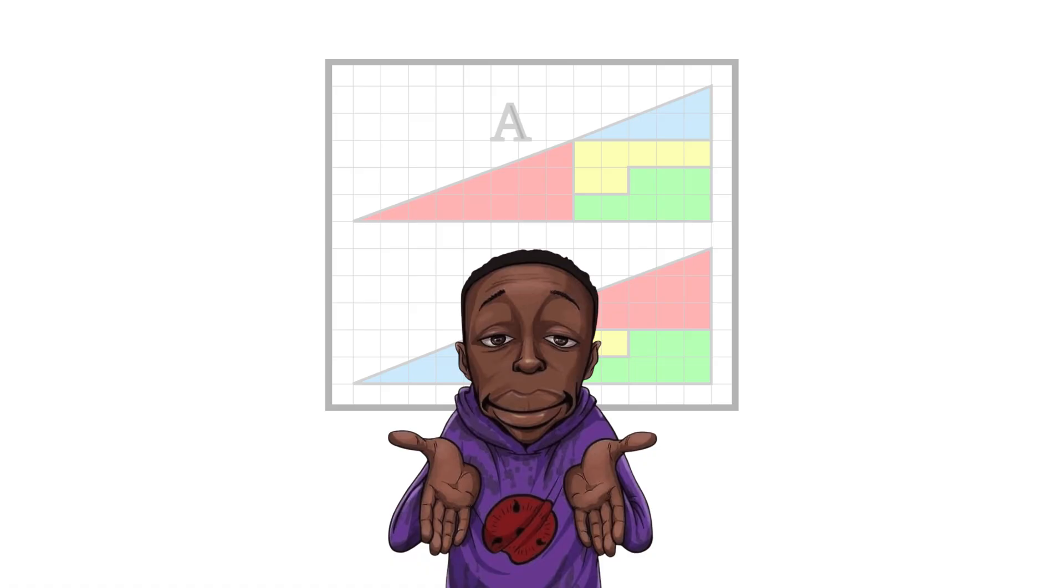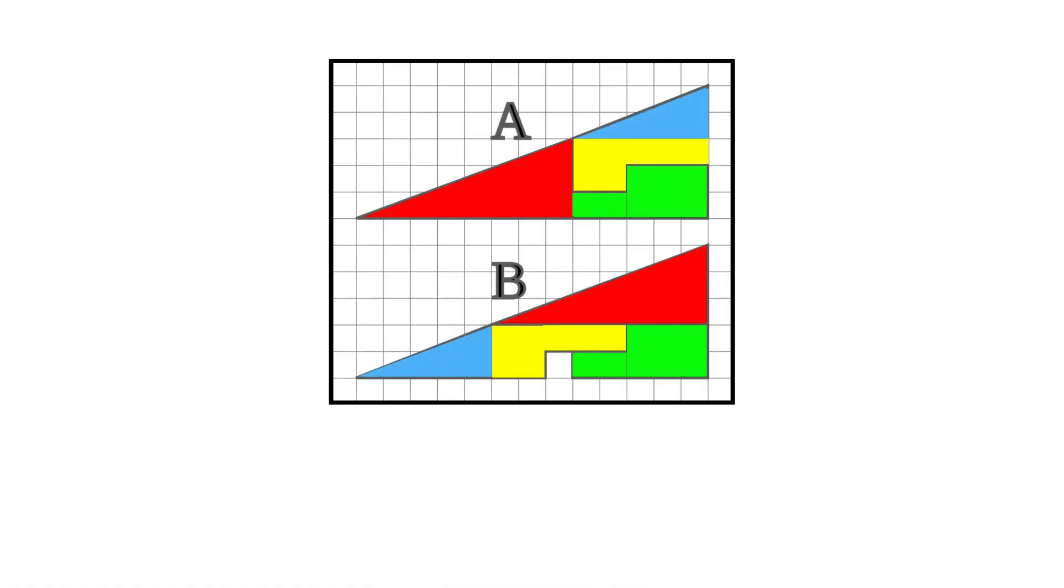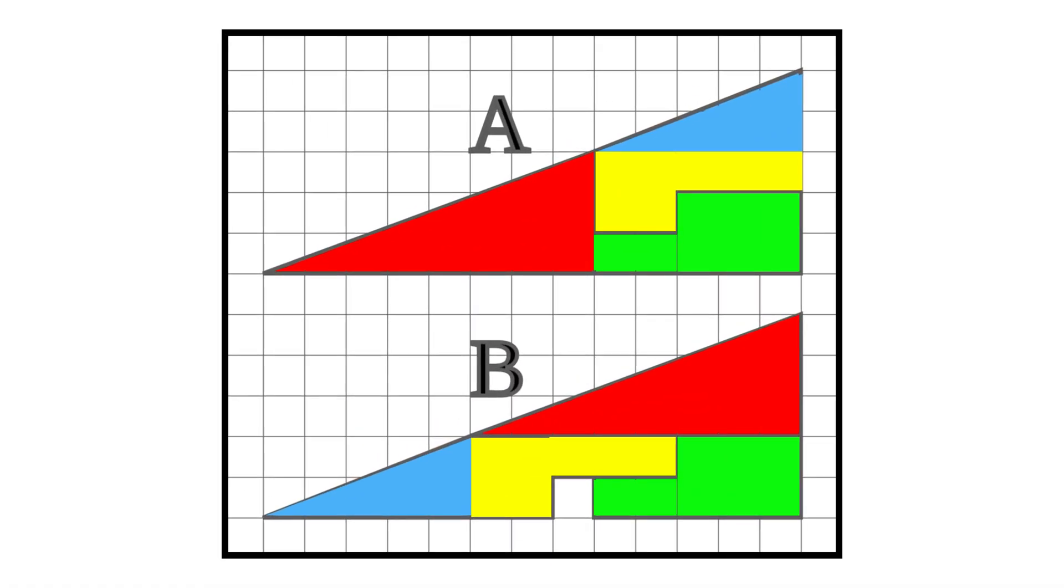At first glance, the problem seems simple. Two triangular figures composed of the same four geometric pieces.